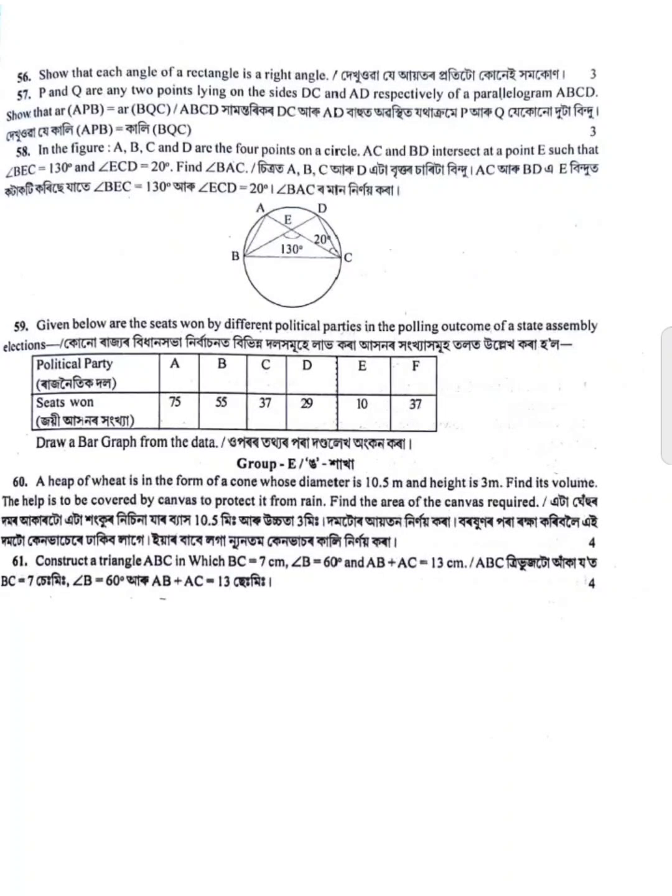In triangle ABC, find BC where BC is equal to 7 cm, angle B is 60 degrees, and AB plus AC is 13 cm.